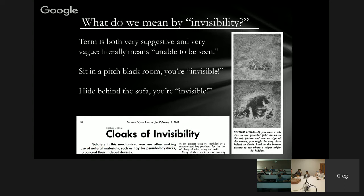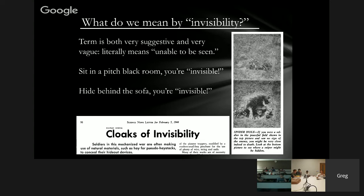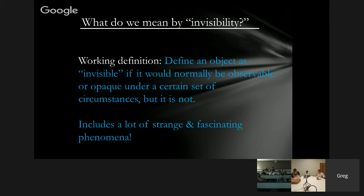To begin, we should point out that the word invisibility is pretty vague when you actually think about it. The term invisibility, and even cloaks of invisibility, has been around for a long time and meant a lot of different things. For instance, an article from 1944 during World War II talked about cloaks of invisibility, but they were pretty much literally talking about hiding in a hole. For a working definition, we should think of an object as invisible if it would normally be observable or opaque under a specific set of circumstances, but isn't.